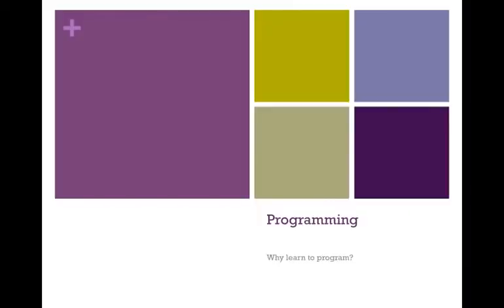Welcome to Applied Logic. This is the first class in the programming sequence at McHenry County College. We've brought in the Applied Logic class to help people succeed in programming. There are really two parts to learning to program: there's learning the logic of programming, all of the different procedures that we use to create programs, and then there's also the syntax of programming, where you actually write the code. This class is about the logic of programming, and we've separated the two to help people succeed.